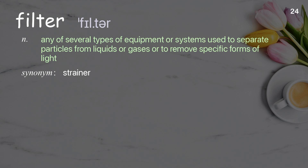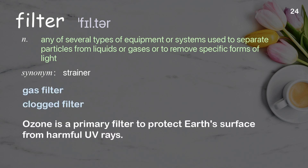Filter. Any of several types of equipment or systems used to separate particles from liquids or gases, or to remove specific forms of light. Examples: gas filter; clogged filter; ozone is a primary filter to protect Earth's surface from harmful UV rays.